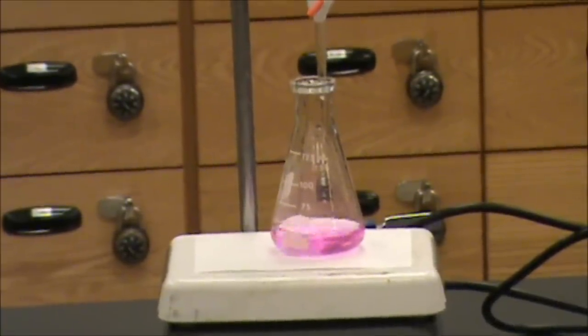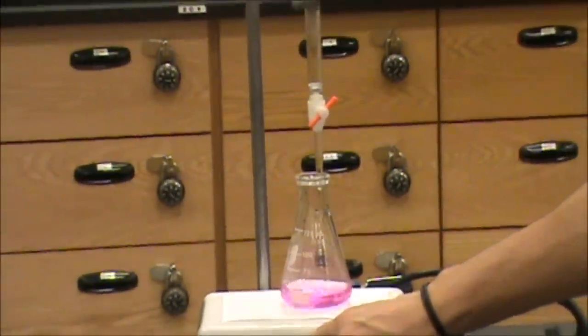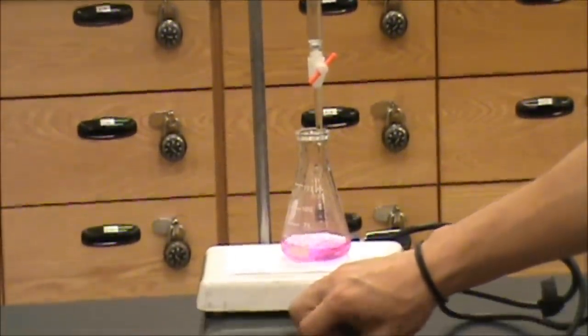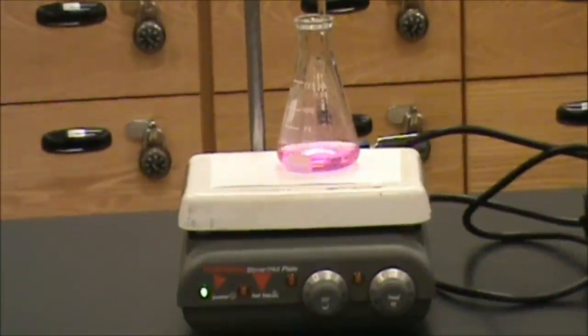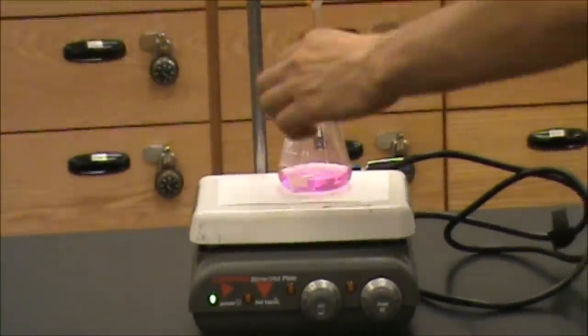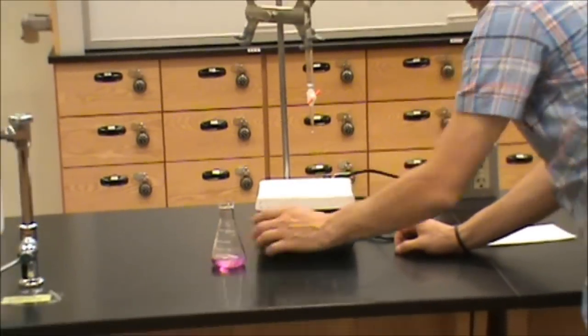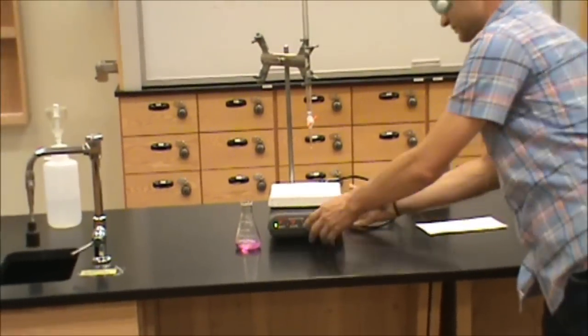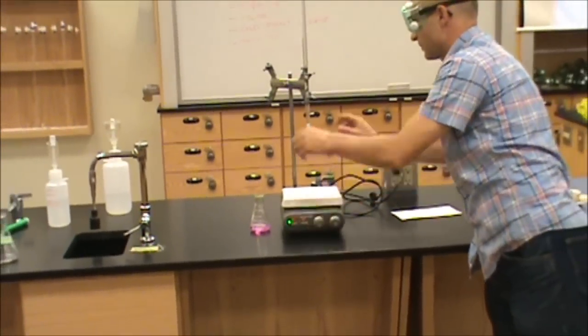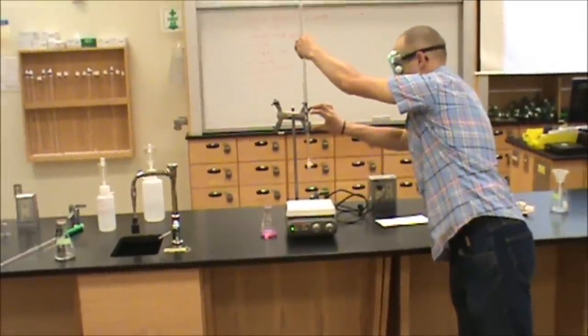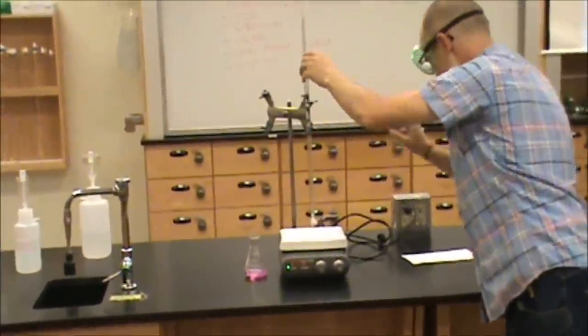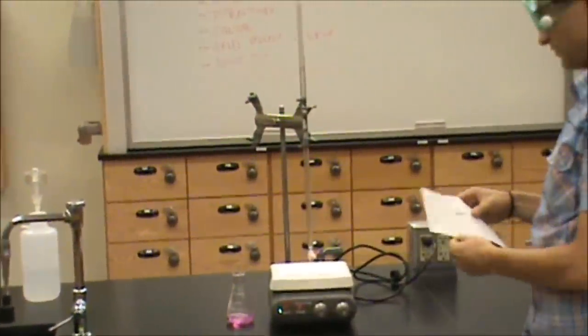And now what we want to do is turn off our stirrer. We are going to remove our analyte, slide our stir plate out of the way, and once again slide our burette downwards so it will be easy to read our volume.